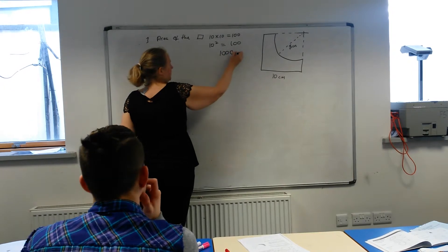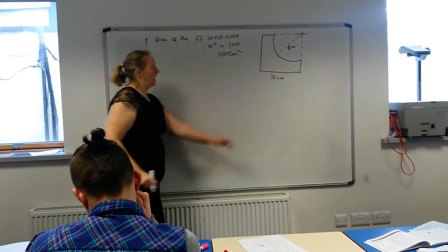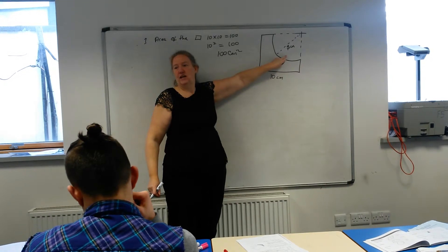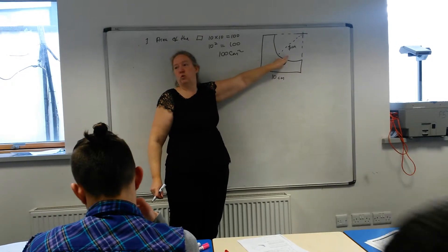And that's your area of your square, is a hundred centimeters squared. Next thing you have to do is get the chunk that's taken out. The chunk that's taken out is a quarter circle.